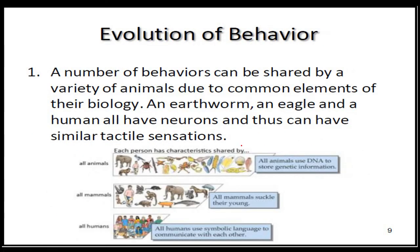The evolution of behavior stems from its origins — you study a behavior from its ancestry to understand how it developed. For example, an earthworm, an eagle, and a human all share a similarity: they all have neurons, even though the earthworm is a lower form of animal. Since neurons are the basic unit of the brain, we may share behavioral similarities with earthworms and eagles. That is the concept of evolution of behavior.